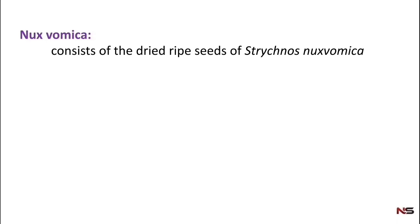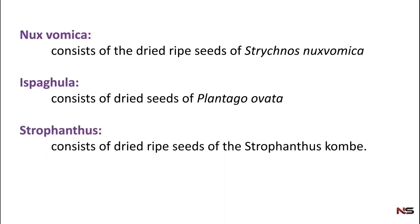Nux Vomica - the biological source is dried ripe seeds of Strychnos Nux Vomica. Ispaghula - dried seeds of Plantago ovata. Strophanthus - dried ripe seeds of Strophanthus Kombe. All these belong to the category seeds. And the last one, Digitalis, consists of dried leaves of Digitalis purpurea.